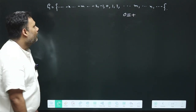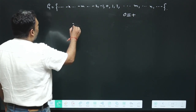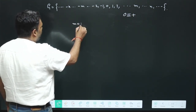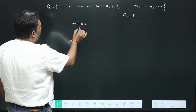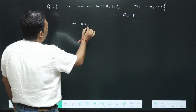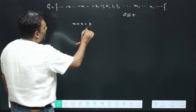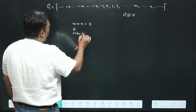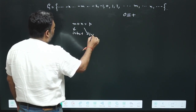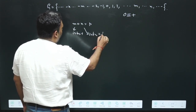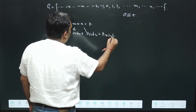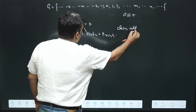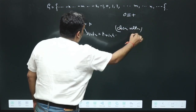We check closure: if m and n are integers, then m + n = p, and p is also an integer. So the sum of any two integers is again an integer belonging to G. Therefore, the closure property is satisfied.